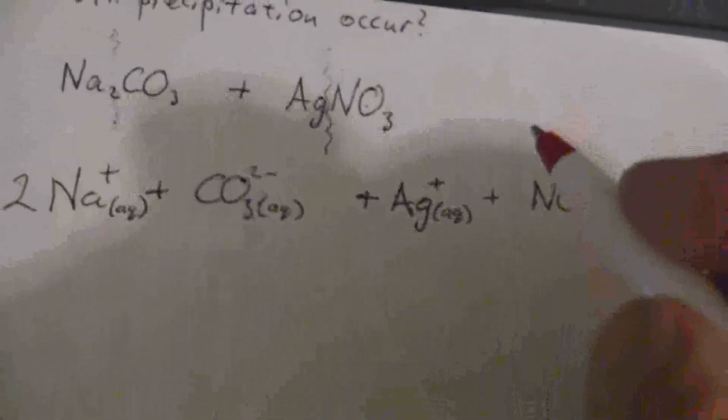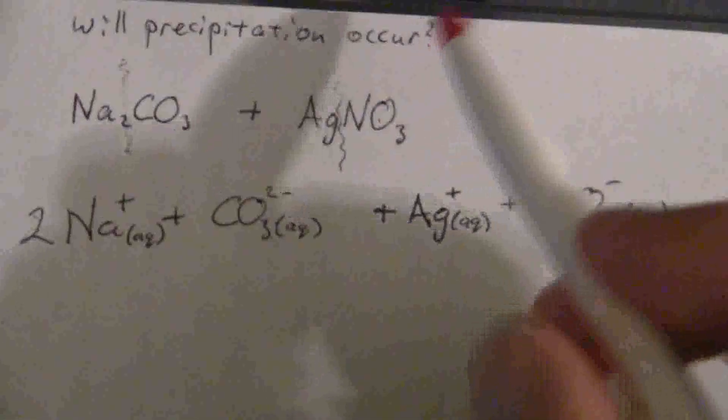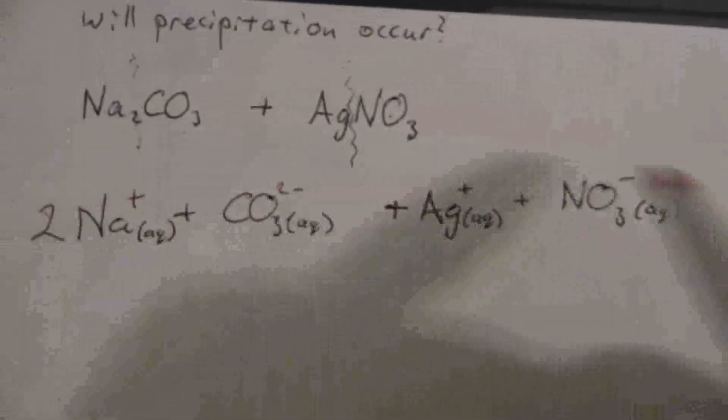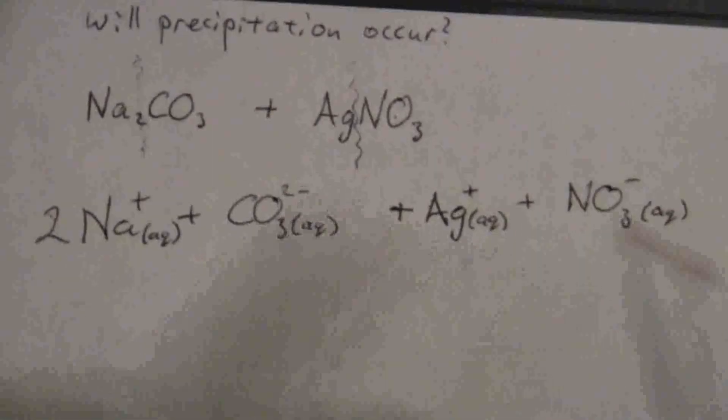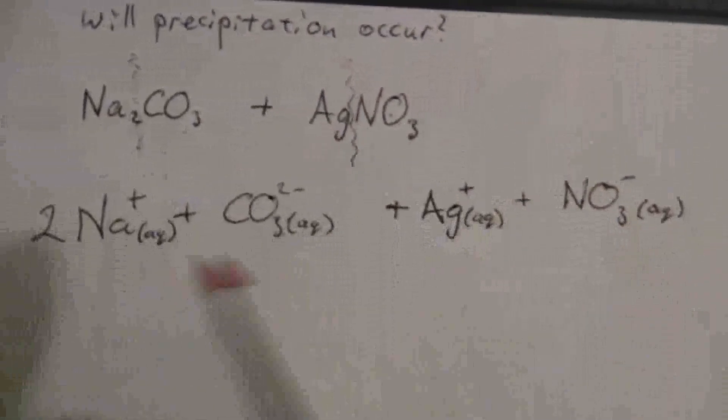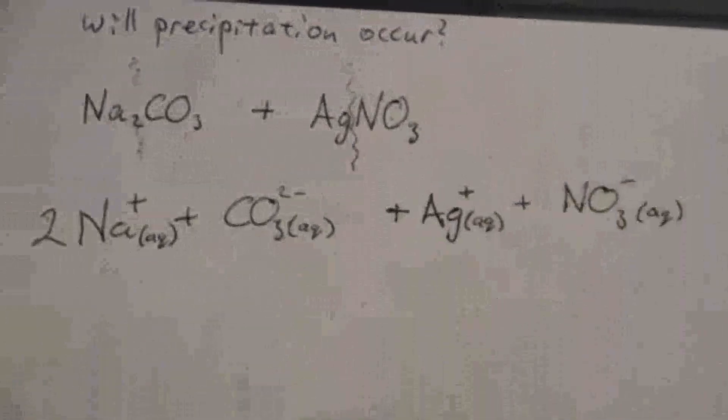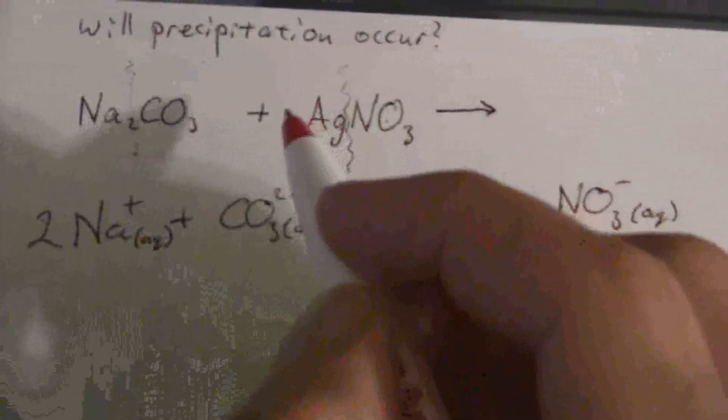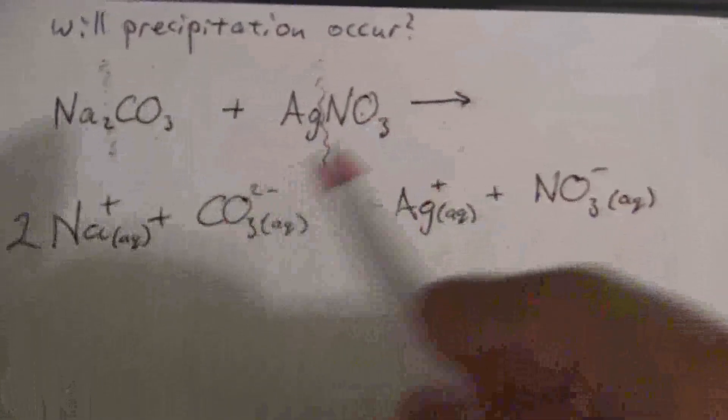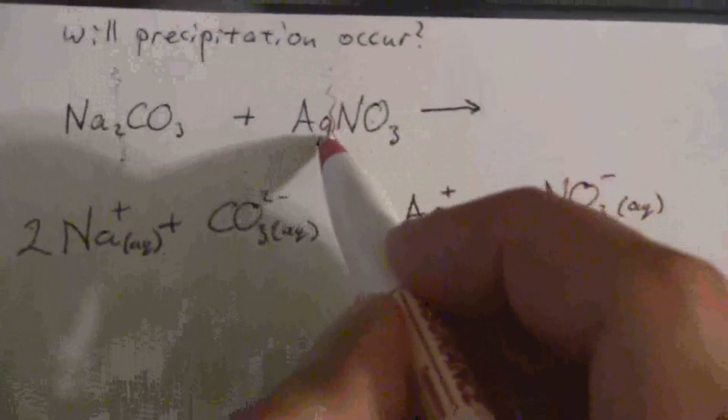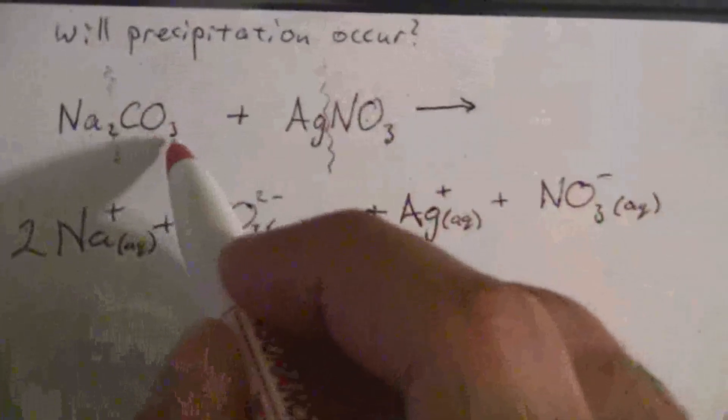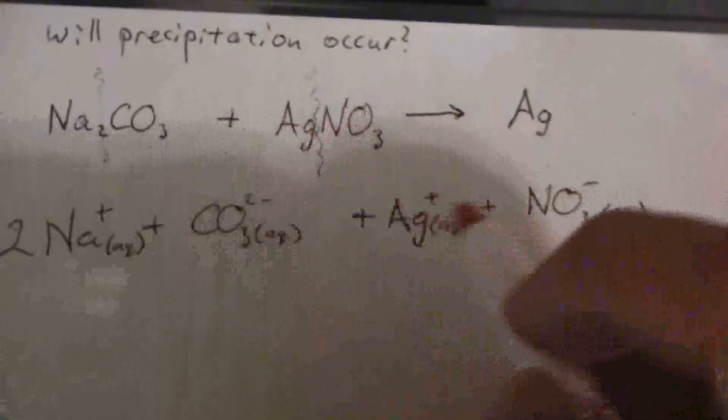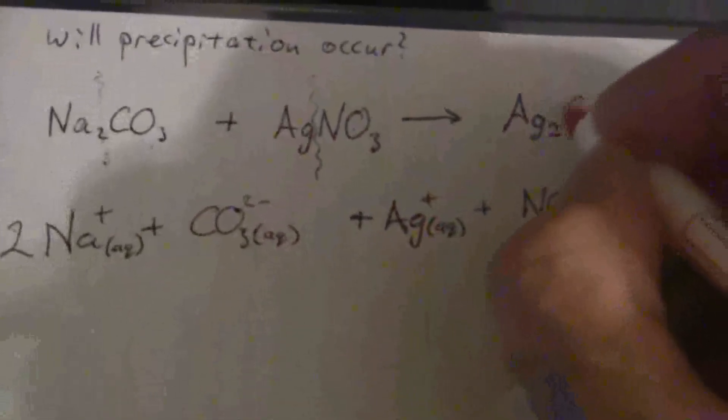So the question is, will precipitation occur? That means now I've mixed these two solutions. So now I have all four of these ions floating around in the same solution. Precipitation will occur if some combination of those will produce a solid compound. We can do this without writing out all of the ions. And we can say because there's only one other combination that we can get. And that is, if the silver, instead of being with the nitrate is with the carbonate, we'll have Ag, and that's a negative two. So I need two of those, Ag2CO3.